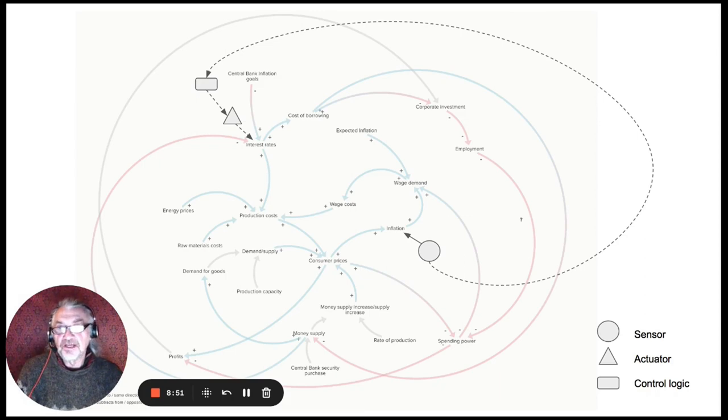They have an actuator that they can activate in the form of interest rates. And so if they raise interest rates then they can expect that all of these mechanisms start to kick in, where cost of borrowing is increased and that goes on to change employment, that changes spending power, that changes spending, etc. etc. So that's the way we can start to symbolize it and show it graphically.